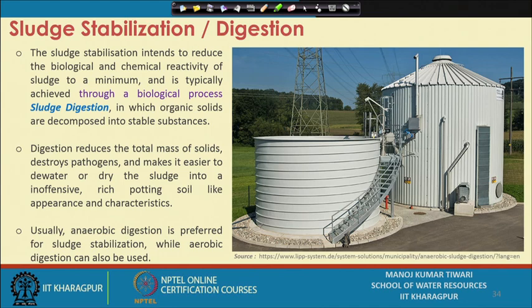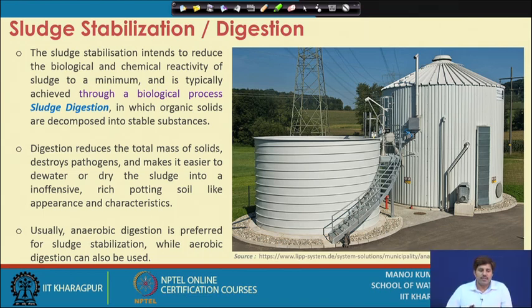Stabilization is essentially a digestion process. Sludge is stabilized with the intent to reduce the biological and chemical reactivity of the sludge. We call it a stabilized sludge when there is not much biological or chemical reactions taking place within the sludge medium. This is typically achieved through biological processes called sludge digestion. There are thermal digestion processes as well, but biological digestion predominates. Sludge stabilization can be achieved through either thermal means or biochemical means.